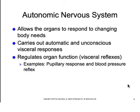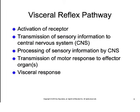The two subdivisions of the autonomic nervous system are the sympathetic and the parasympathetic divisions. The sympathetic division is designed to prepare the body to deal with a threat situation, whereas the parasympathetic division is designed to prepare the body for everyday maintenance.